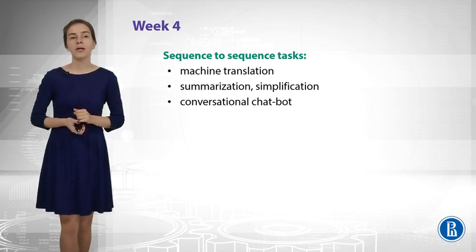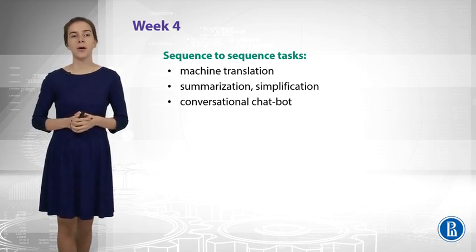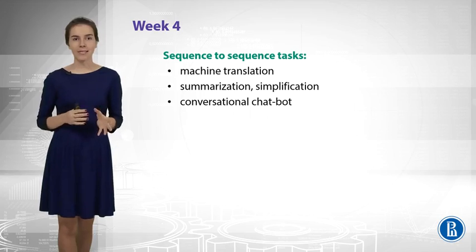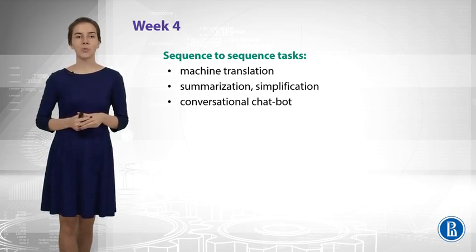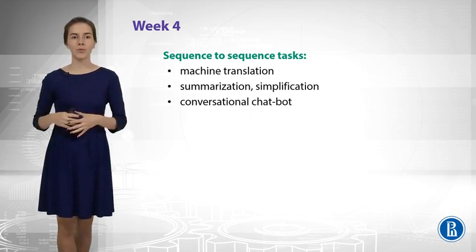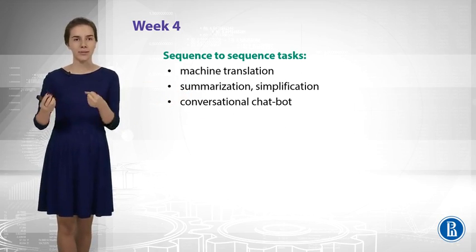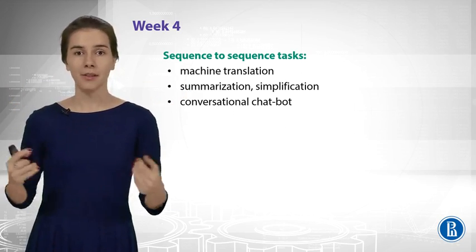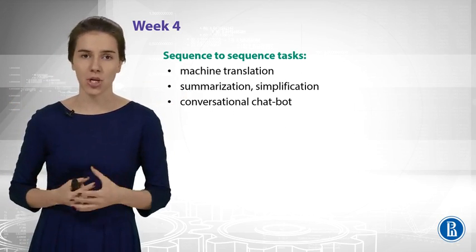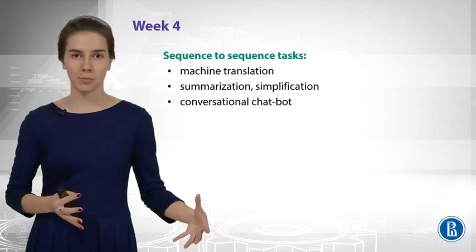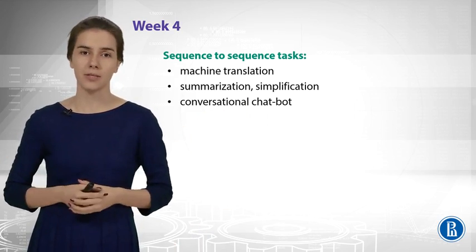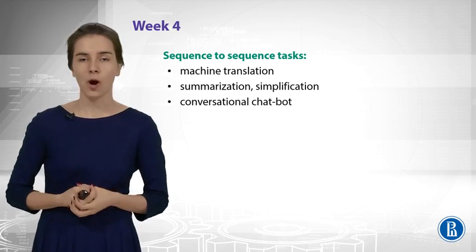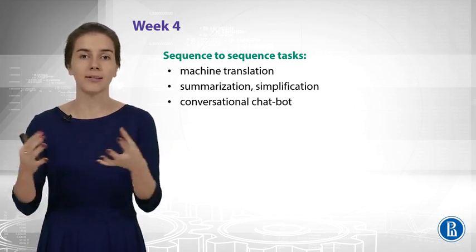The next week will be more advanced and will be about sequence-to-sequence tasks. Nearly any task in NLP can be stated as a sequence-to-sequence task. For example, in machine translation you have one sentence and you need to translate it to another sentence — those are two sequences. In summarization, you have a big document as input, which is a long sequence, and you need to produce a short summary, also a sequence. You also have this in speech recognition and in conversational chatbots, where you have questions and answers.